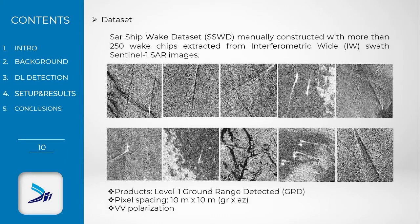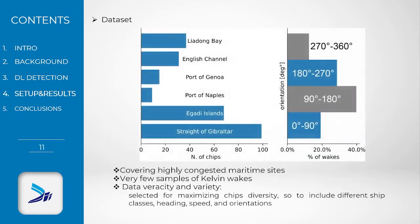In this work, the dataset was manually constructed from interferometric wide swath Sentinel-1 images. Products correspond to the Level 1 Ground Range Detected, with a pixel spacing of 10 meters by 10 meters, and are all gathered in vertical polarization to enhance wake visibility. More than 250 ship wakes were collected, covering highly congested maritime sites, and were chosen to maximize ship diversity, including different ship classes, speed, and orientation.